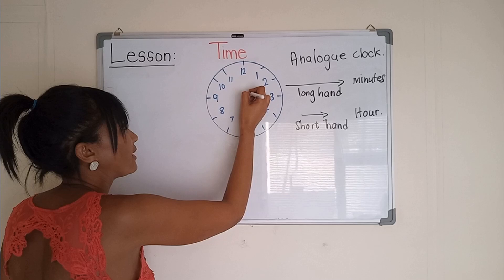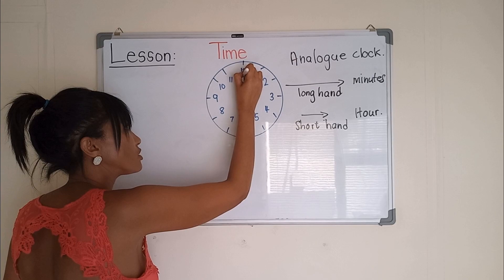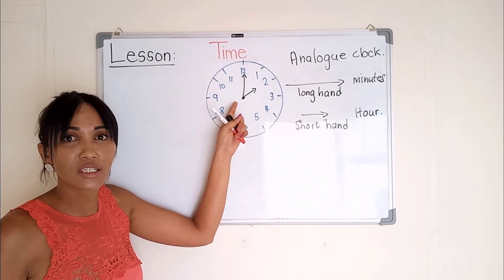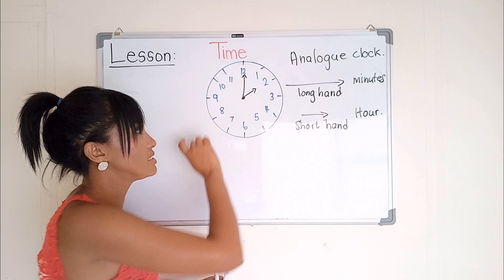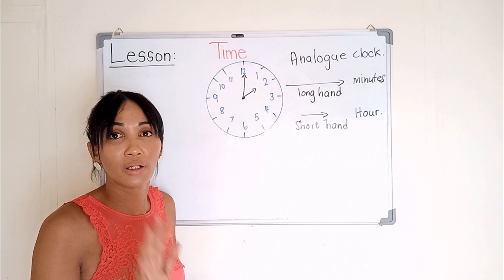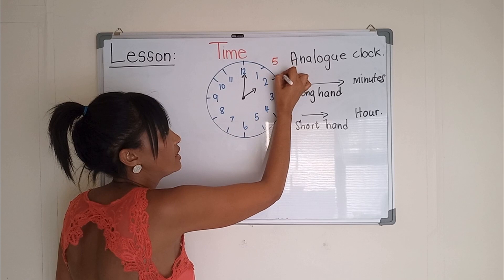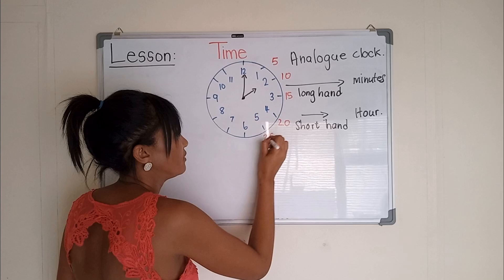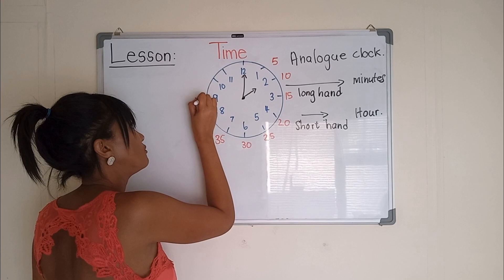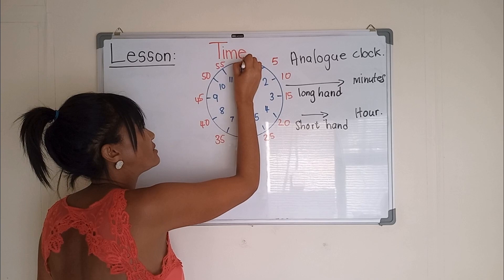So if the short hand is on the two and the long hand is on the twelve — remember the long hand is for minutes — we will count our minutes around the outside of the clock using the five pattern, or multiples of five. Starting at one and counting in fives: 5, 10, 15, 20, 25, 30, 35, 40, 45, 50, 55 and 60.